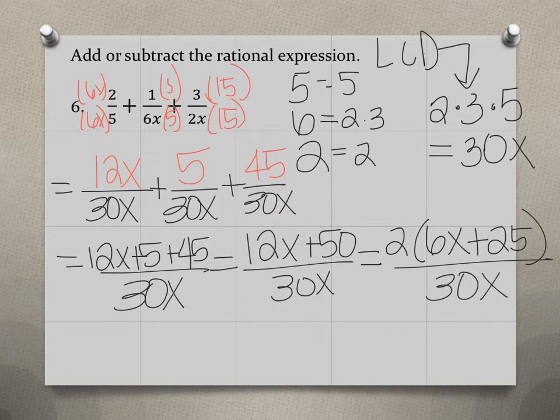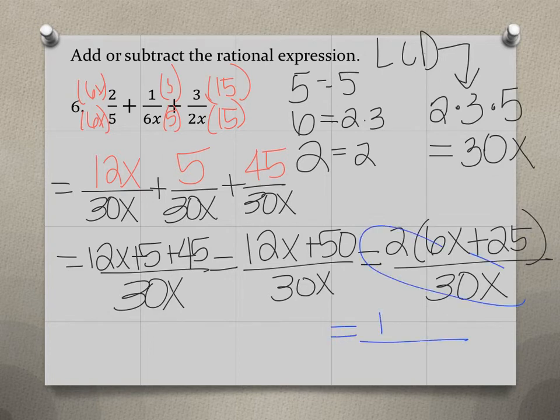And then 30x and 2, they have a common factor of 2. So 30x and 2 over 30x can reduce to 1 over 15x.